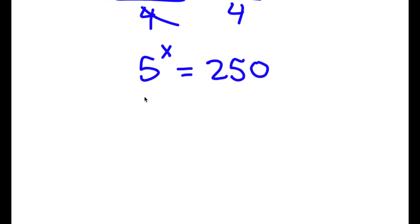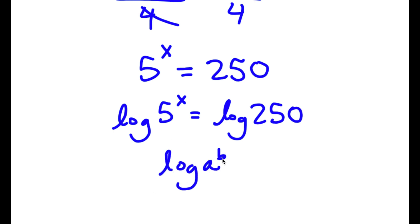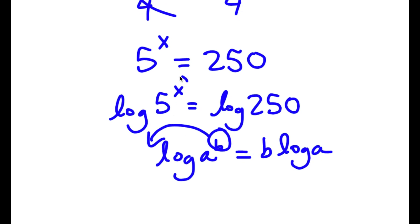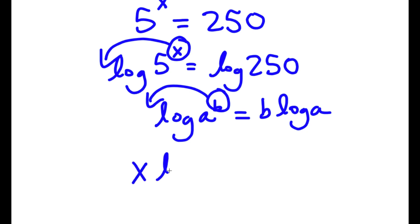So now I'm going to take the log on both sides. So now I have log 5 to the power of x is equal to log 250. And if I have something in the form log a to the power of b, I can move this exponent b to the front — so now I have b times log a. So log 5 to the power of x, I can move x to the front, giving me x times log 5 is equal to log of 250.